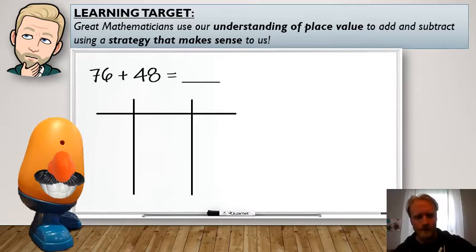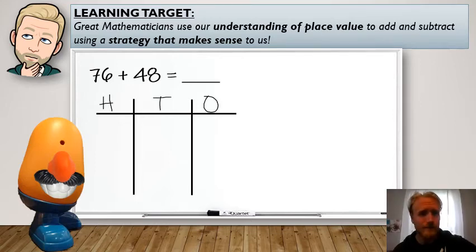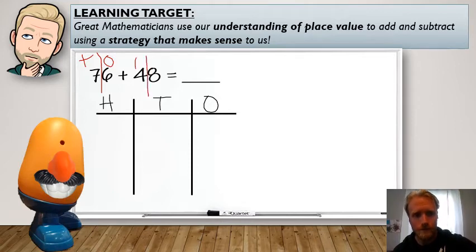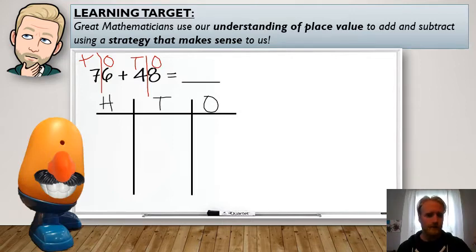All right. So just like I've done before, HTO. And like I keep saying, guys, annotate your numbers. So T-O, T-O. All right. So I know that there's seven tens and six ones in 76. I know there's four tens and eight ones in 48. All right. So we're adding together. So let's go ahead and represent.